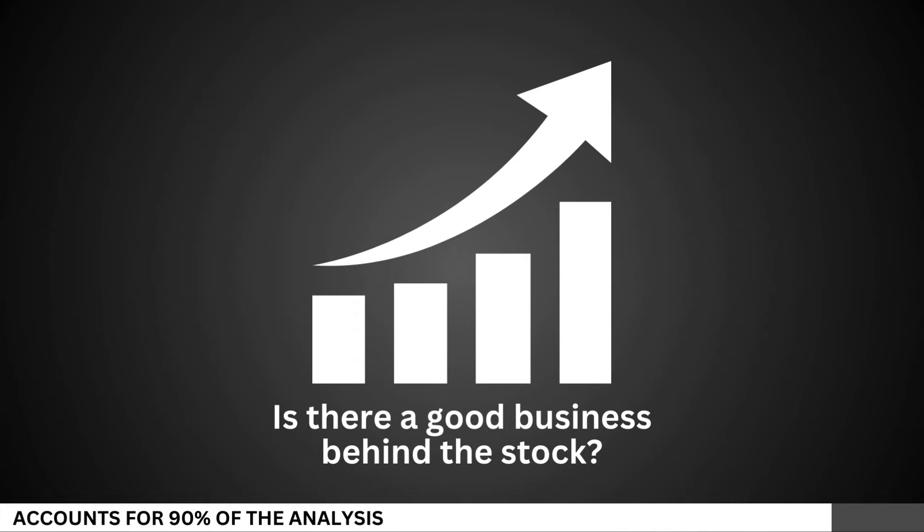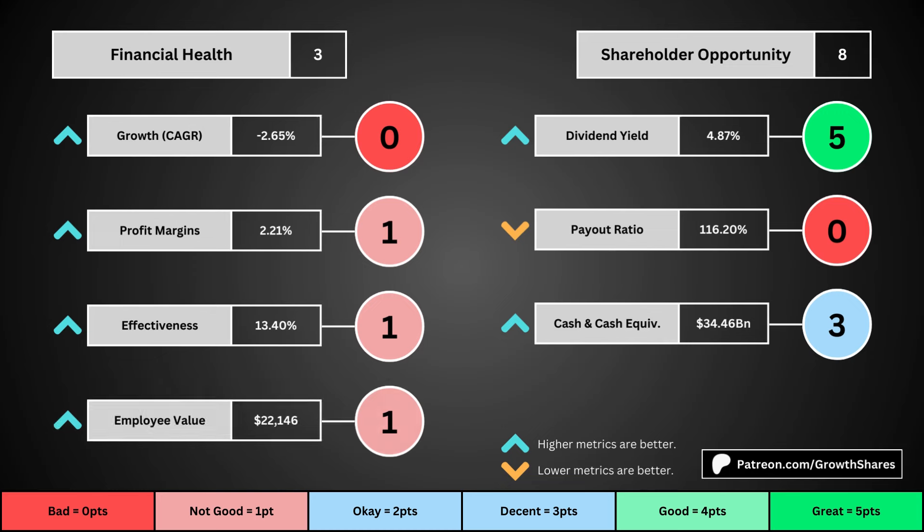We'll look at 14 metrics to determine the business fundamentals. The first set of metrics deals with the company's financial health: its projected earnings growth for the next five years, its profit margins, its effectiveness which looks at the company's returns on equity, assets, and invested capital, and then the employee value which looks at how much value the average employee adds to the business. You can see the values for each of these metrics as well as the point totals awarded in the bubbles.